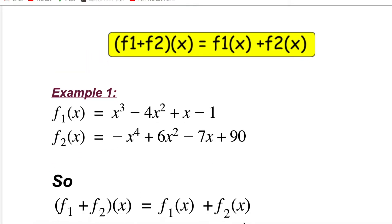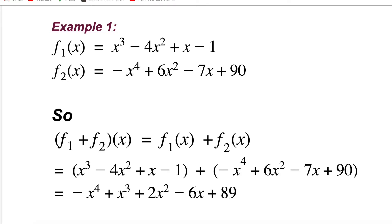Let's go through an example. If I have f1(x) = x³ − 4x² + x − 1 and f2(x) = −x⁴ + 6x² − 7x + 90, and I ask you to find (f1 + f2)(x), that means I want f1(x) + f2(x), so I just need to add them. You need to be organized by substituting each function with its equation. Since there is addition between them, it doesn't matter if you put parentheses or not, but it's more organized.